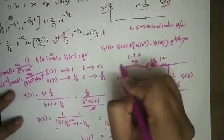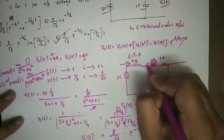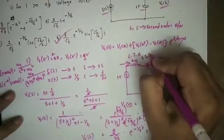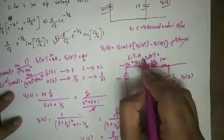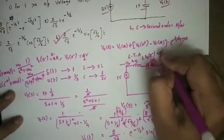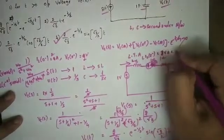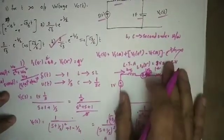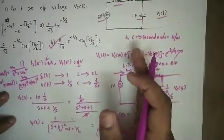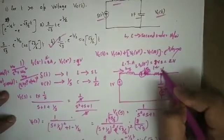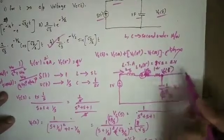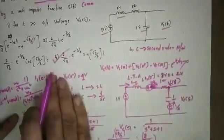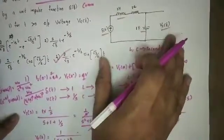Suppose Vc(0-) = 1 volt and iL(0-) = 2 amperes with a switch. In the transform domain we have a plus or minus source. The current has a direction, and with minus-plus polarity we add the L·iL(0-) term, which equals 1×2 = 2 volts. This is how non-zero initial conditions are handled. The problem approach is the same but not identical.